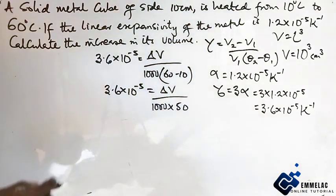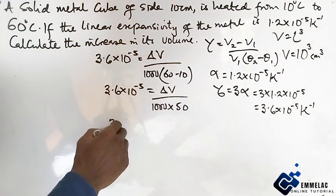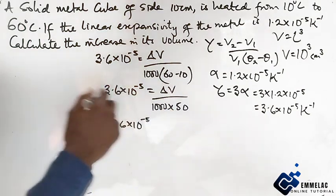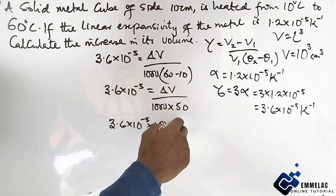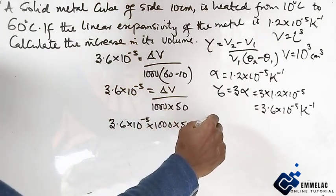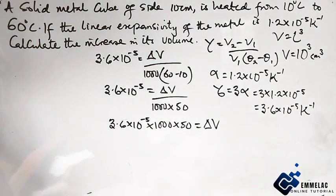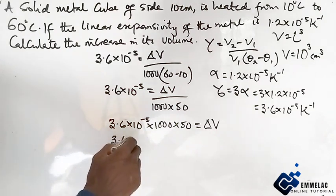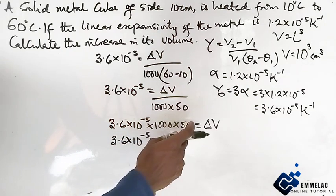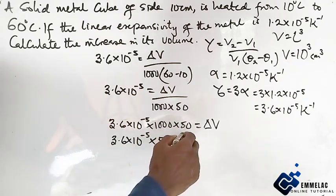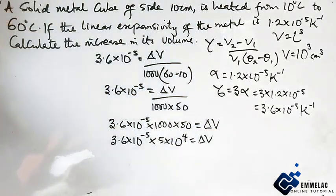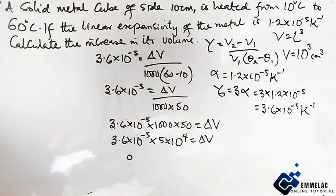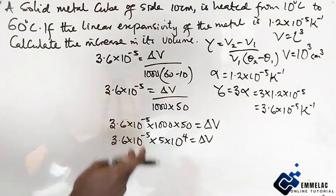So here we have 3.6 times 10 raised to power minus 5 times 1000 times 50 equals delta V. This gives us 3.6 times 10 raised to power minus 5 times 5 times 10 raised to power 4 equals delta V.